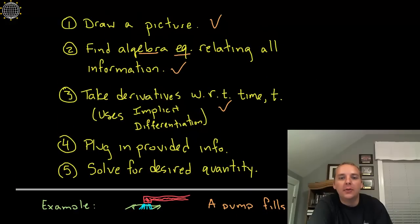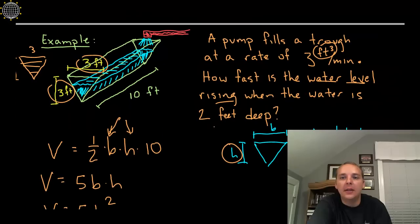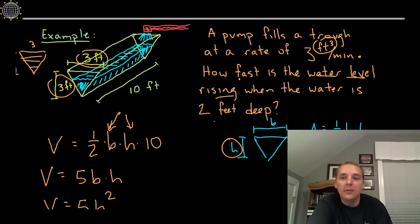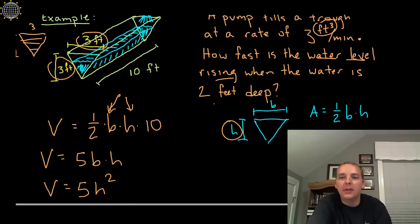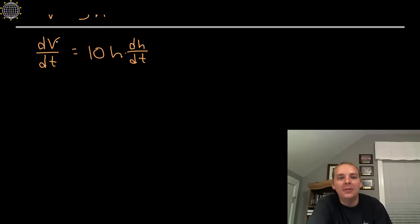Alright, now, I took the derivative with respect to time T. Now, I have to plug in the information that they give me. They tell me quite a few things. For instance, the pump fills the trough at a rate of 3 cubic feet per minute, that's change in volume per minute. So that's going to be the dV/dT, change in volume over change in time, 3 cubic feet every minute, equals 10 blank blank.